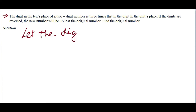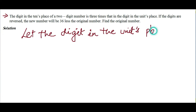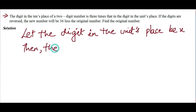Let the digit in the units place be x. Then the digit in the tenth place is 3x, because the problem states it is three times the units digit, so we will call it 3x.